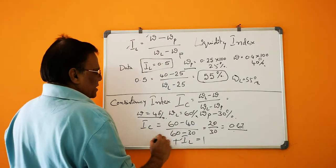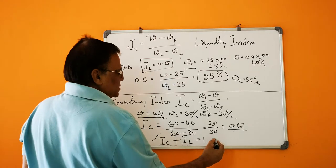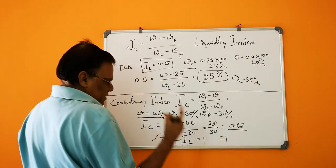IC and IL, if they are for the same soil, they must be equal to 1.